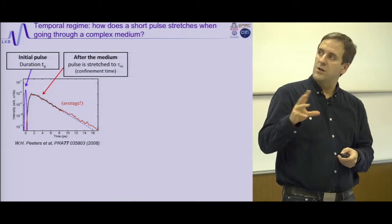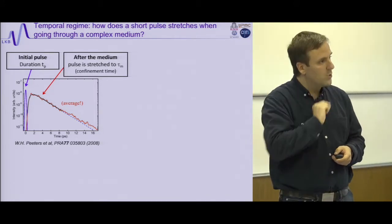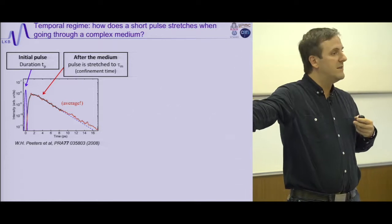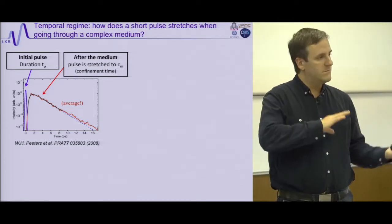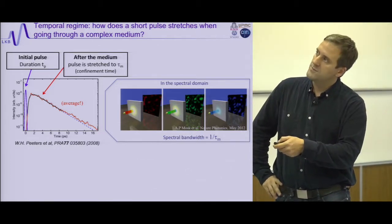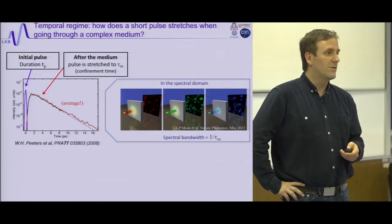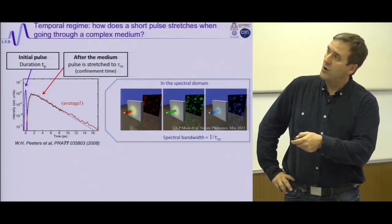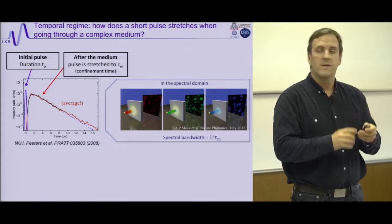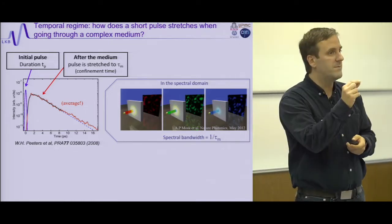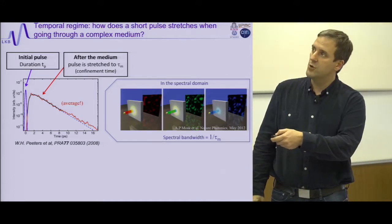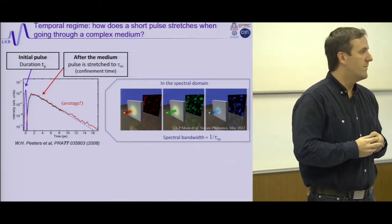Coming back to polychromatic light: if I send a short pulse and it broadens after the medium, another way to look at it is that speckle depends on wavelength. The speckle depends on how long the light stays inside the medium. The spectral bandwidth — how much you need to change the wavelength to see a change in speckle — is related to the dwell time, to the temporal broadening caused by the medium.